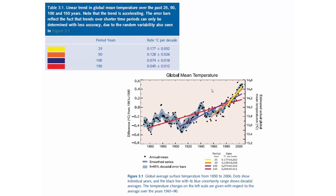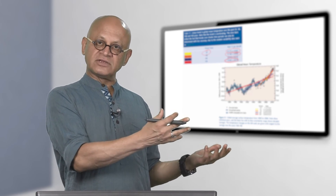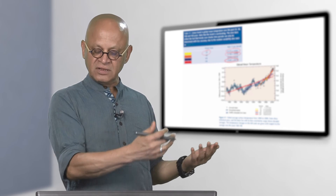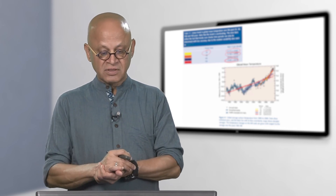Here is the linear trend in global mean temperatures for the past 25, 50, and 150 years. The rate of warming per decade is quite high in the last 25 years compared to the last 50 or 150 years. The warming trend since the industrial revolution is barely about 0.05 degrees centigrade per decade, but as you focus more and more on recent times, the rate of warming is accelerating. This is consistent with the radiative forcing and the greenhouse gases: N2O, methane, carbon dioxide, ozone — they are increasing at a higher rate and the warming is also keeping up with it.